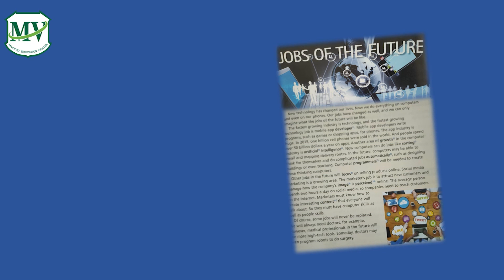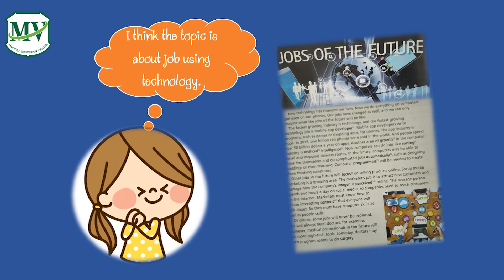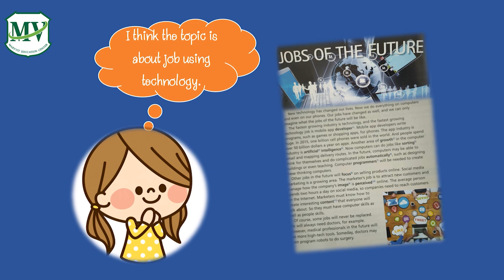There are pictures and texts. We can see how the topic does. We can see the title in the story. Chips of the Future and the character of the future. We can see the text like this. I think the topic is about job using technology.